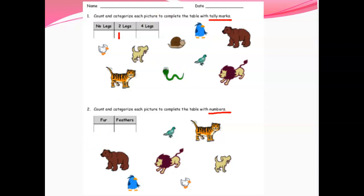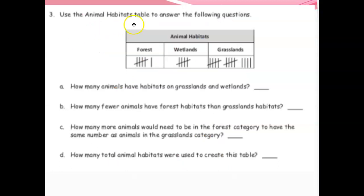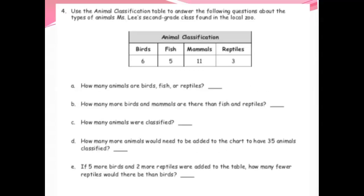On your next slide you are using the animal habitats table to answer the following questions — this is really similar to what we just did. For example, how many animals have habitats on grasslands and wetlands? That 'and' tells me I'm going to have to be adding up two groups. Lastly, use the animal classification table to answer questions about the types of animals in Ms. Lee's second grade class found in the local zoo. Read the questions carefully and use the chart and the data given to answer the questions. That's the whole lesson for today — reach out if you need help, have fun, and I can't wait to see your work.